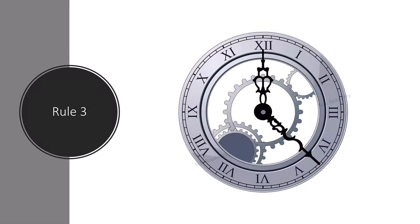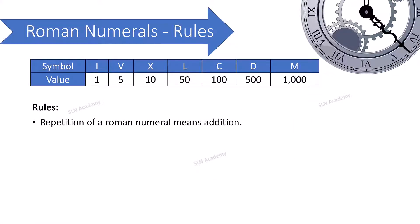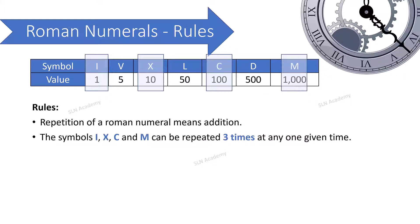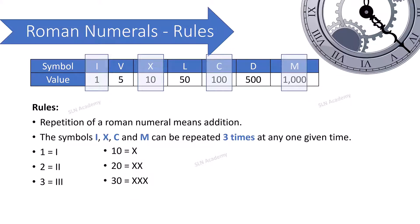Rule number three: Repetition of a Roman numeral means addition. The symbols I, X, C, and M can each be repeated up to three times. For example: 1 = I, 2 = II, 3 = III — I is repeated a maximum of three times. Similarly, 10 = X, 20 = XX, 30 = XXX — X is repeated a maximum of three times.